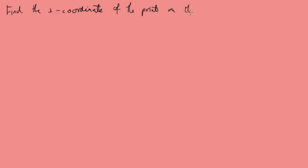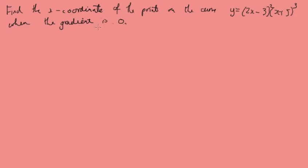Let's do another one. We want to find the x-coordinates of the points on the curve where the gradient is 0. Anywhere where the gradient is going to be 0, you need to differentiate, because when the gradient is 0, dy by dx equals 0.